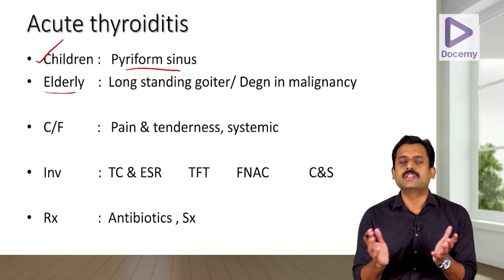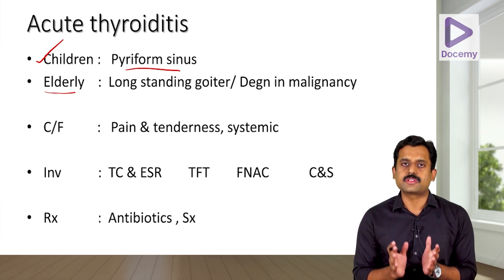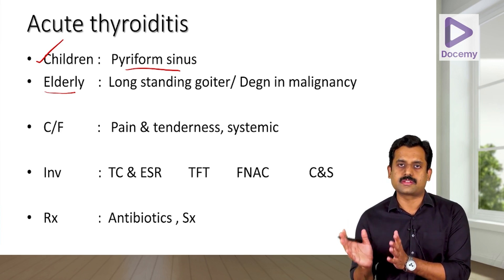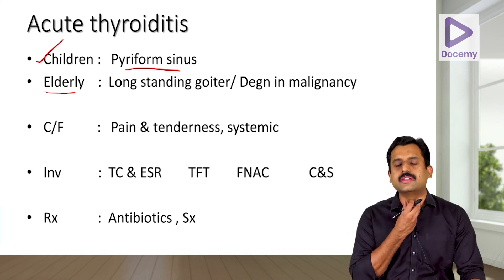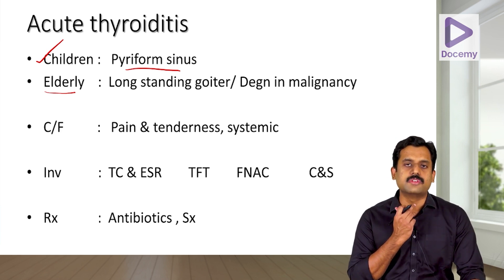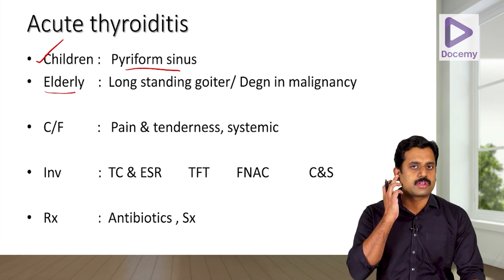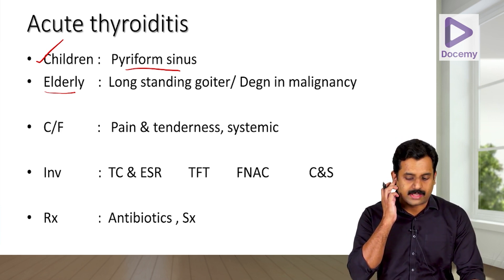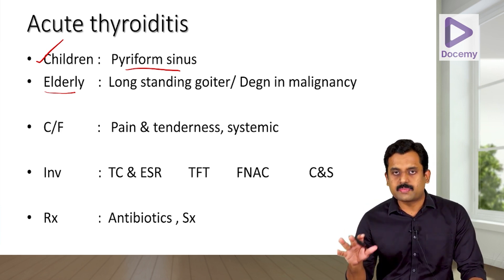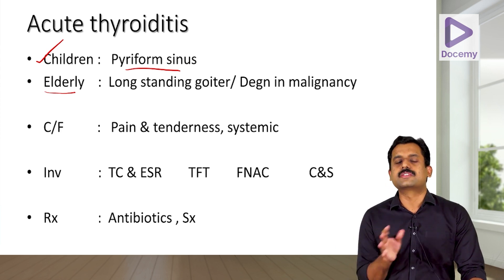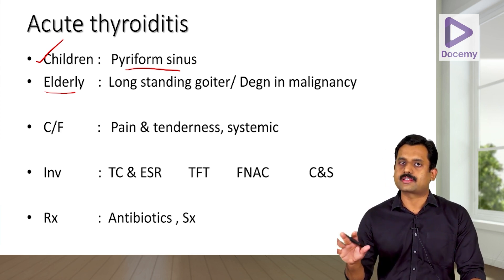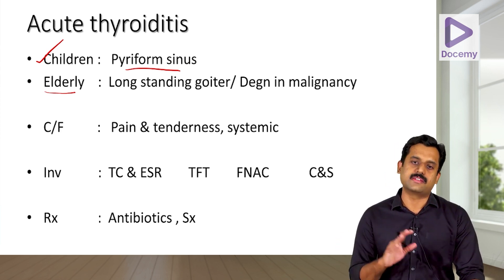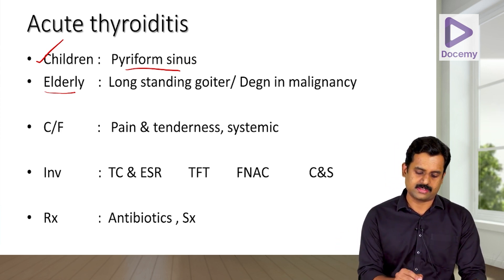Patients present with sudden onset pain and tenderness over the thyroid gland or anterior neck pain, which can radiate to the jaw and ear. This can be associated with systemic features like fever, arthralgias, and myalgias.